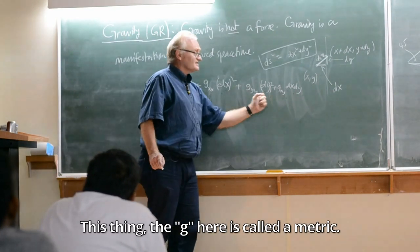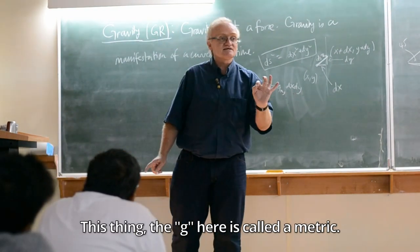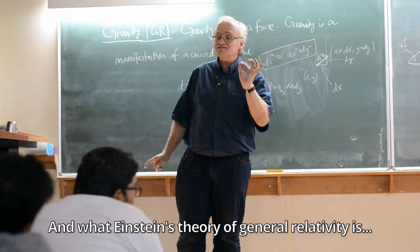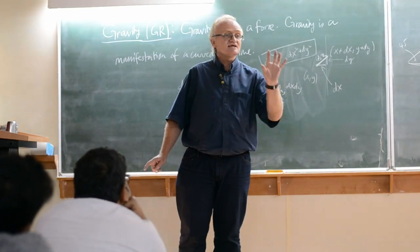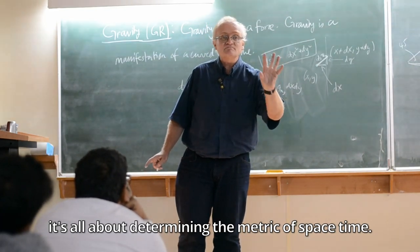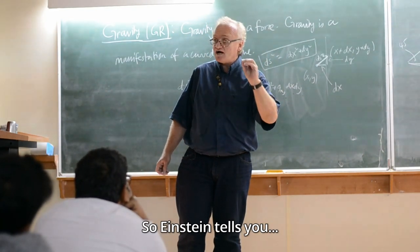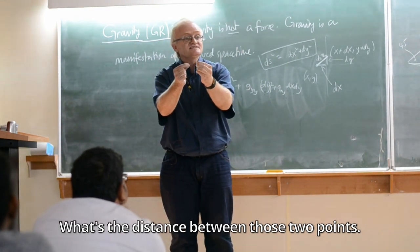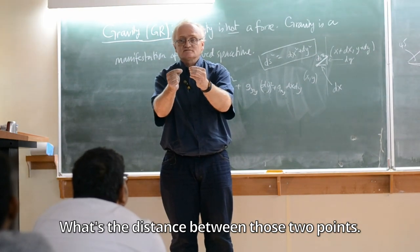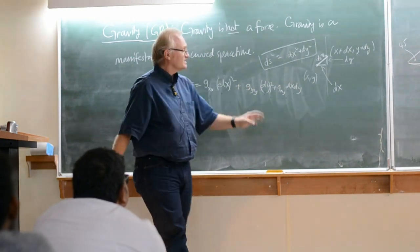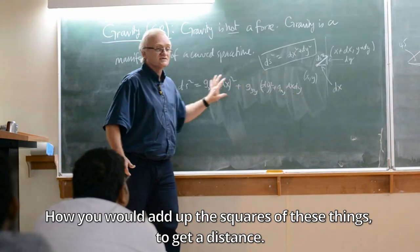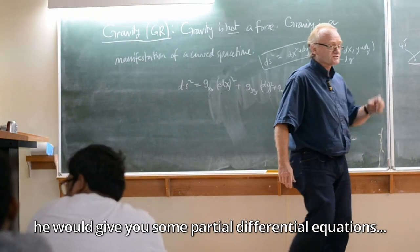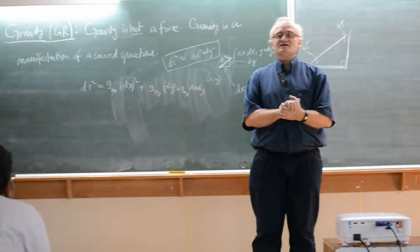This thing, the g here, is called a metric. It tells you how to measure distances. And what Einstein's theory of general relativity is, it's all about determining the metric of spacetime. So Einstein tells you: take two nearby points in spacetime, what's the distance between those two points? He's telling you this measure, how you would add up the squares of these things to get a distance.